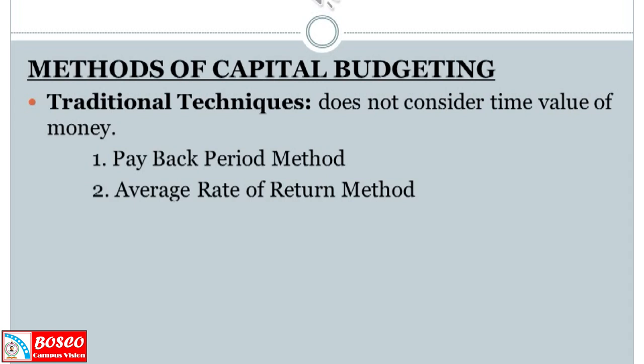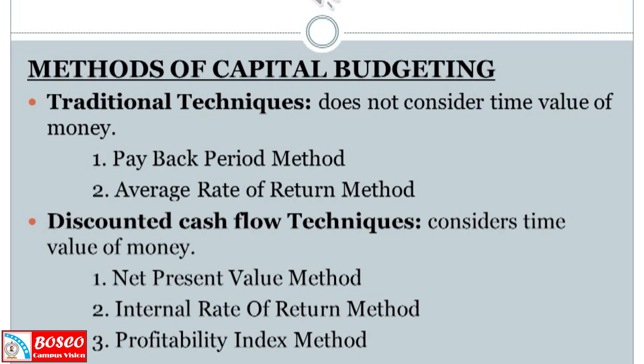Traditional techniques — where time value is not considered — are the Payback Period method and the Average Rate of Return method. Modern techniques are Discounted Cash Flow techniques, which consider the time value of money. In modern techniques, we consider three methods: Net Present Value method, Internal Rate of Return method, and Profitability Index method.